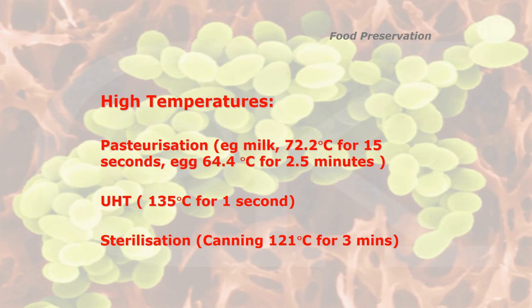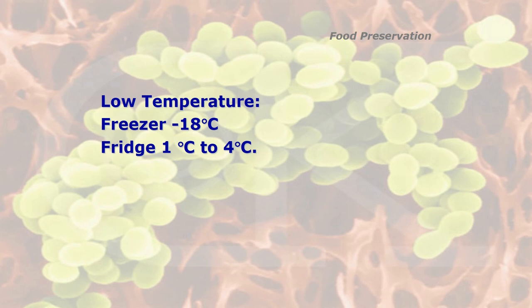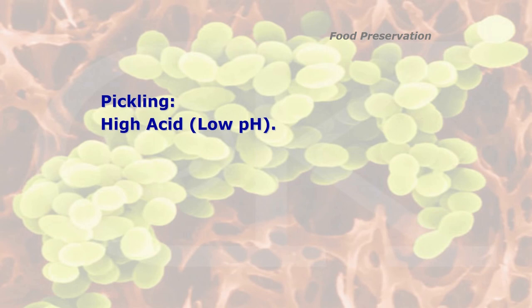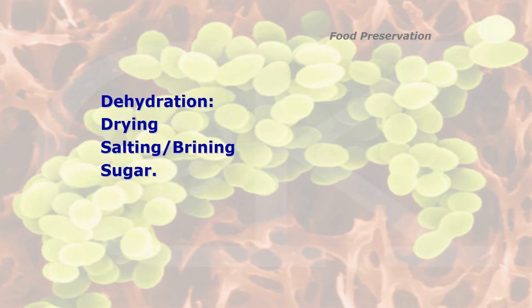These specific temperatures are just for interest — you don't need to memorise them. What's important is remembering that high temperature and low temperature are both methods of food preservation. Low temperature includes keeping food in the freezer at -18°C or lower, or a fridge at 1 to 4°C. Other methods include pickling using high-acid ingredients with a low pH value such as vinegar, lemon juice, or lime juice. Dehydration — or drying — involves adding salt, brine, or even sugar to draw out liquid and reduce moisture content.